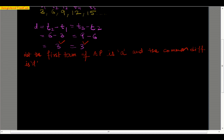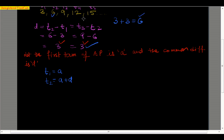Let us find the first, second, third, and fourth terms. The first term T1 is A. For the second term T2, if we add the common difference D to the first term, we get A plus D. In our example, 3 plus 3 equals 6, which is the second term. So adding the common difference to any term gives the next term. T3 equals A plus 2D, and T4 equals A plus 3D.